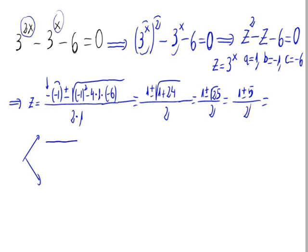With the plus, we have 1 plus 5 divided by 2; with the minus, we have 1 minus 5 divided by 2. Simplifying: 1 plus 5 is 6, divided by 2 gives z=3; and 1 minus 5 is minus 4, divided by 2 gives z=minus 2.